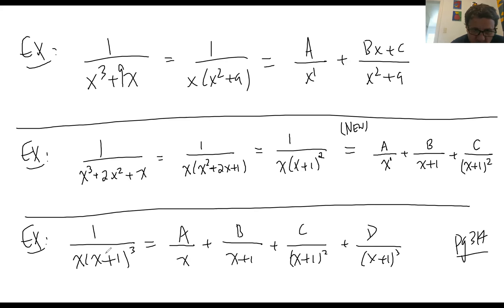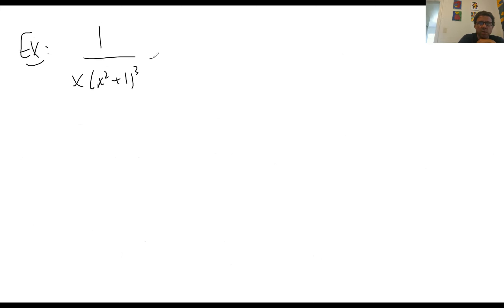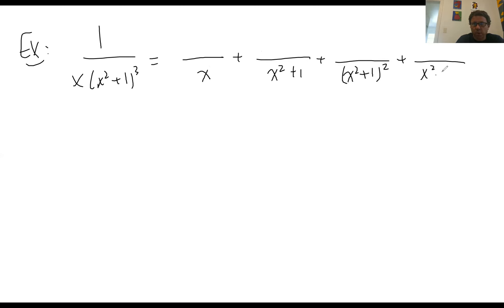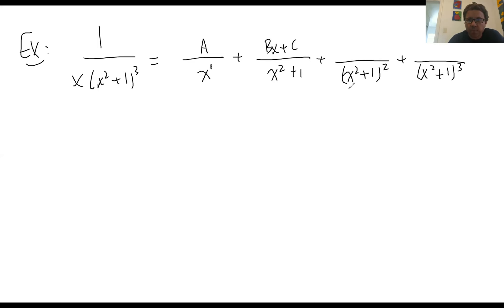If the denominator is x(x² + 1)³, you get four terms: x, (x²+1), (x²+1)², and (x²+1)³. For x — degree 1 — the numerator is A. For each of the irreducible quadratic terms, the base is x² + 1 — degree 2 — so each numerator is of the form Bx + C, Dx + E, Fx + G. That gives you seven variables to solve for — you definitely don't want to work all the algebra out.